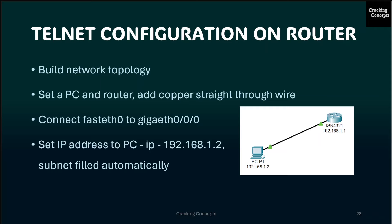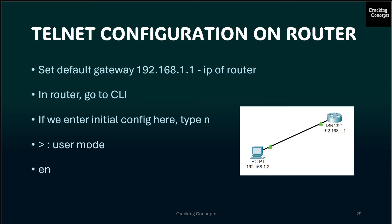First, we build the network topology with a PC and a router, connected using a copper straight-through wire. The connection is set up between the Fast Ethernet 0 interface of the PC and the Gigabit Ethernet 0/0/0 interface of the router. Then we set the PC IP address as 192.168.1.2 — the subnet mask is filled in automatically. We also set the default gateway as 192.168.1.1, which will be the IP address of the router interface we configure shortly.